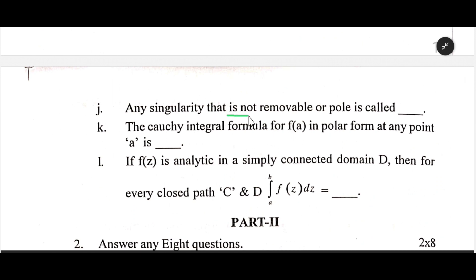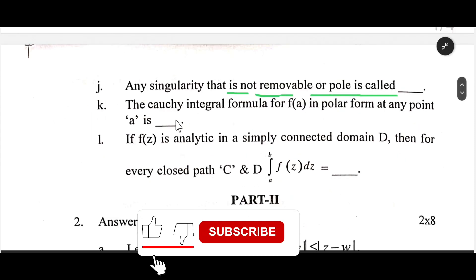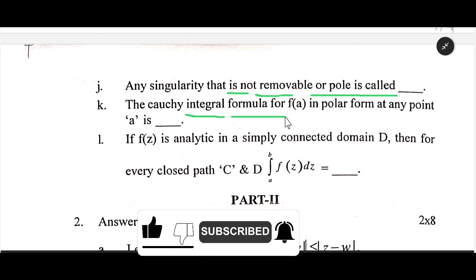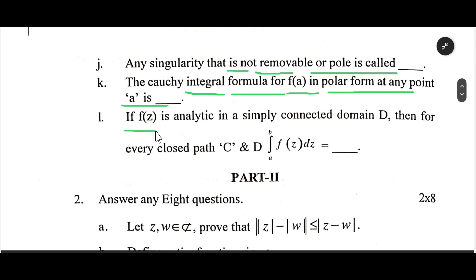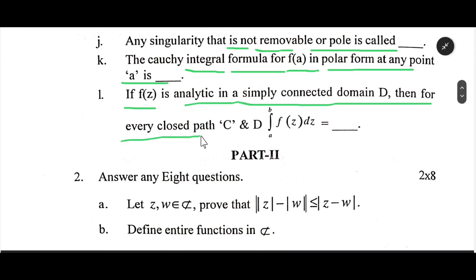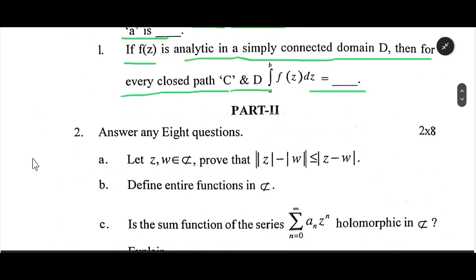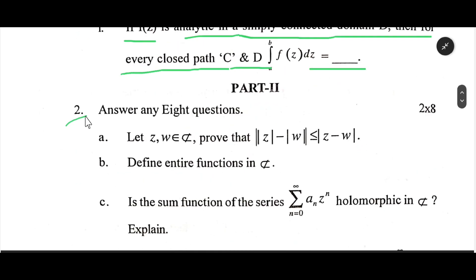Any singularity that is not removable or a pole is called an essential singularity. The Cauchy integral formula for f(a) in polar form at any point a is dash. If f(z) is analytic in a simply connected domain D, then for every closed path c in D, the integration of f(z) dz equals dash.